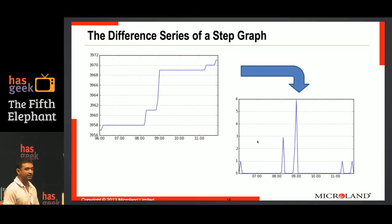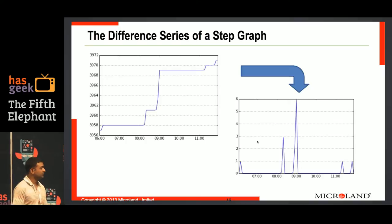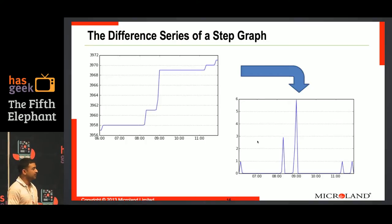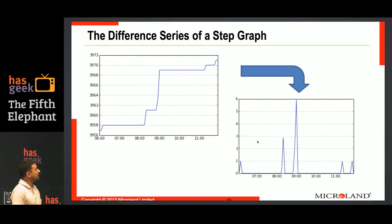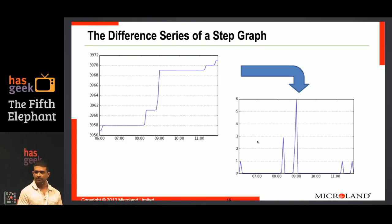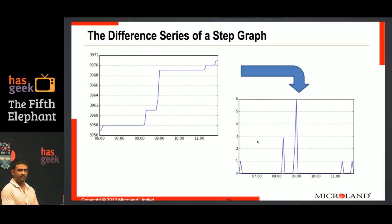Here's a step function — also works well with the differencing operator. The mode is now at around 0; you've got runs. You can describe it using the run ratio, the run strength, and the modal strength. The differencing operator is useful because you can recover the original series from it. If you have a starting value, then you take cumulative sums of the difference series and you recover the original series — so you're not losing information.